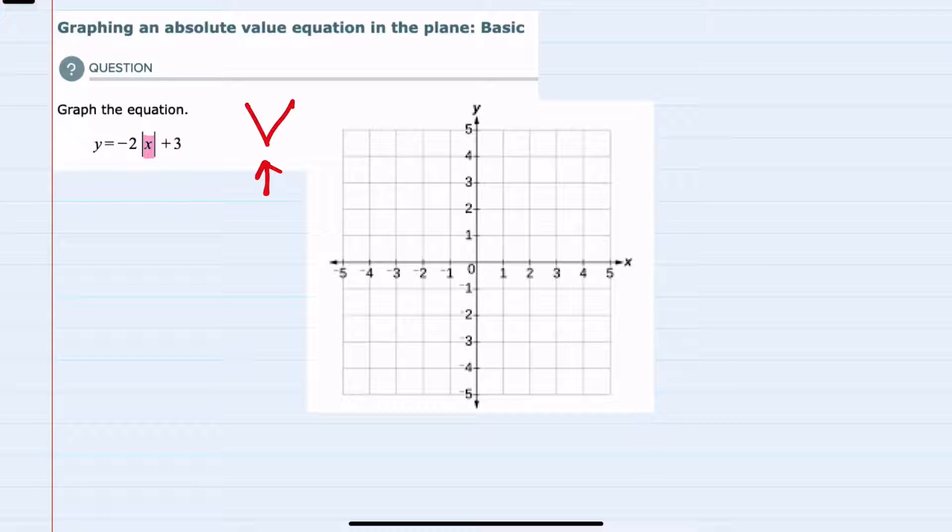Since this has just the x inside the absolute value, we know that the point of the V will happen at x equals 0. To graph this I'm going to plug in 0 for x, but I'm also going to choose a couple of points to the left of that - minus 1 and minus 2 will work - and a couple of points to the right, so I'll use positive 1 and positive 2.